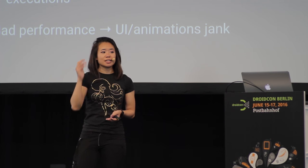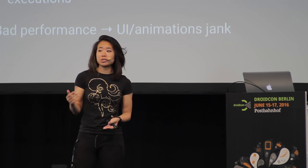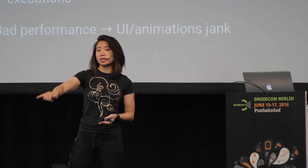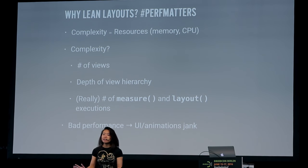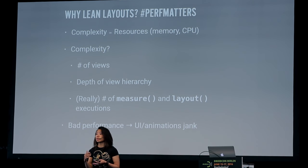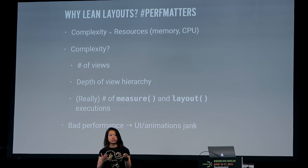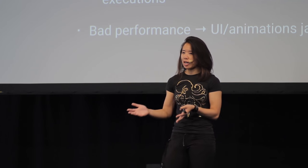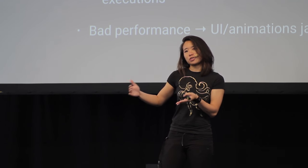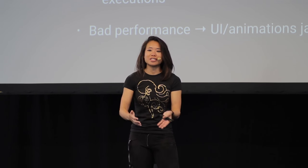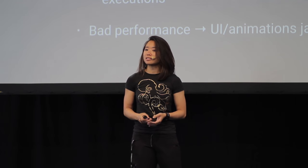Really, what we're talking about is that all of these things result in the number and length of executions of measure and layout when your view hierarchy is being processed. You could write a thousand apps where these two methods never have any problems. But if you're writing a particularly intricate or complex interaction, or you have dense data to display, you can sometimes run into bad performance with measure and layout. You'll get janky and stuttery animations — and in our Android world of material design and motion design, that's just not acceptable.